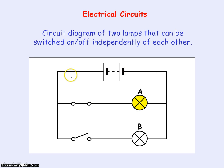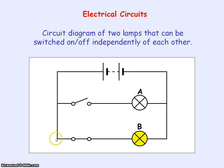If we close the bottom switch, lamp B lights up, and that's because we have a complete circuit loop for the current to flow through. So lamps A and B can be switched on or off independently of each other.